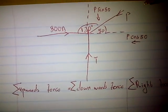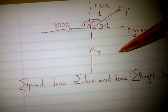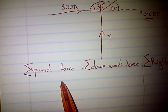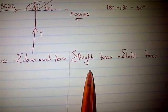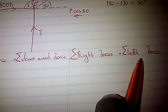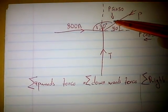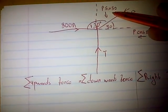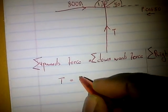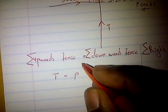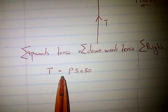To calculate P and T, at equilibrium the sum of upward forces equals the sum of downward forces, and the sum of rightward forces equals the sum of leftward forces. So T, which is going upwards, equals P sin 50 which is going downward — therefore T equals P sin 50.